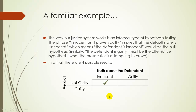In a trial there are four possible results. If somebody is innocent and we find them not guilty, we did good. If somebody is guilty and we find them guilty, that's also good — justice was served. If they're innocent and we find them guilty, that's really bad because we put an innocent person away. And if they're guilty and we find them not guilty, that's also bad — we may have let someone get away with murder. Most people would argue that's not quite as bad as putting an innocent person away.